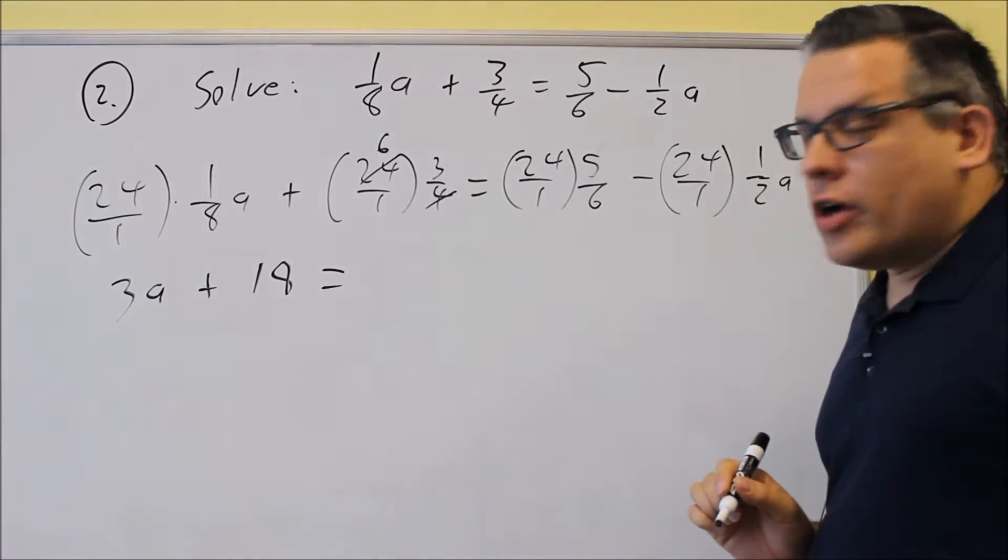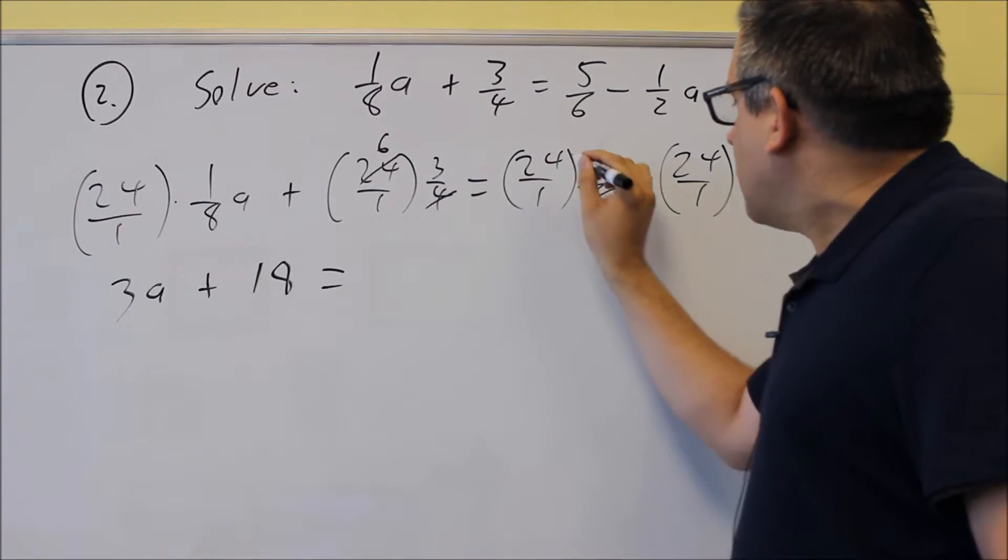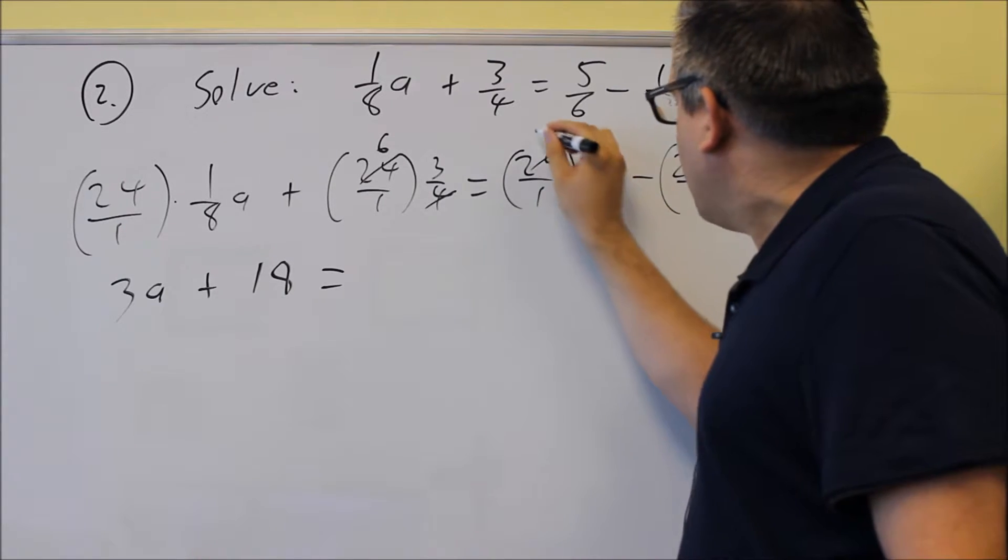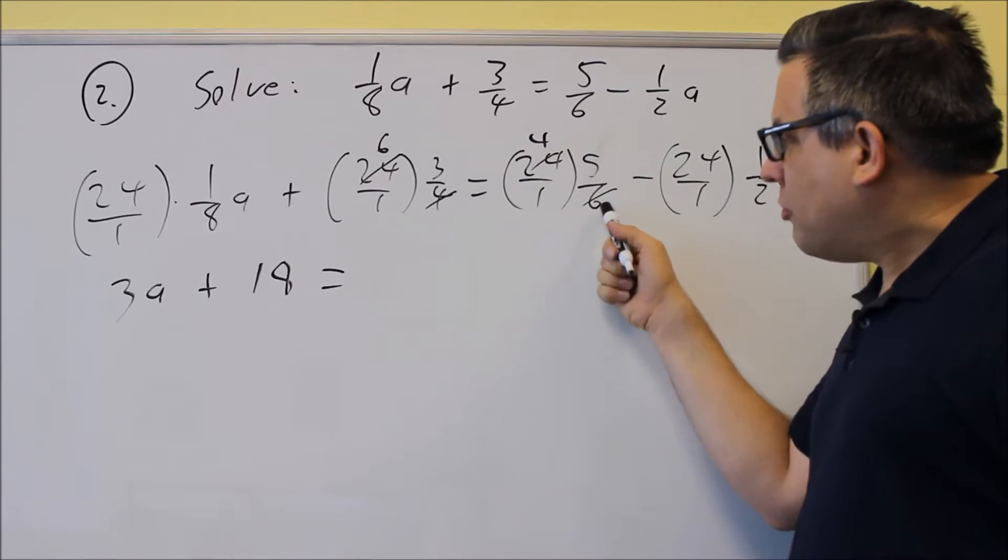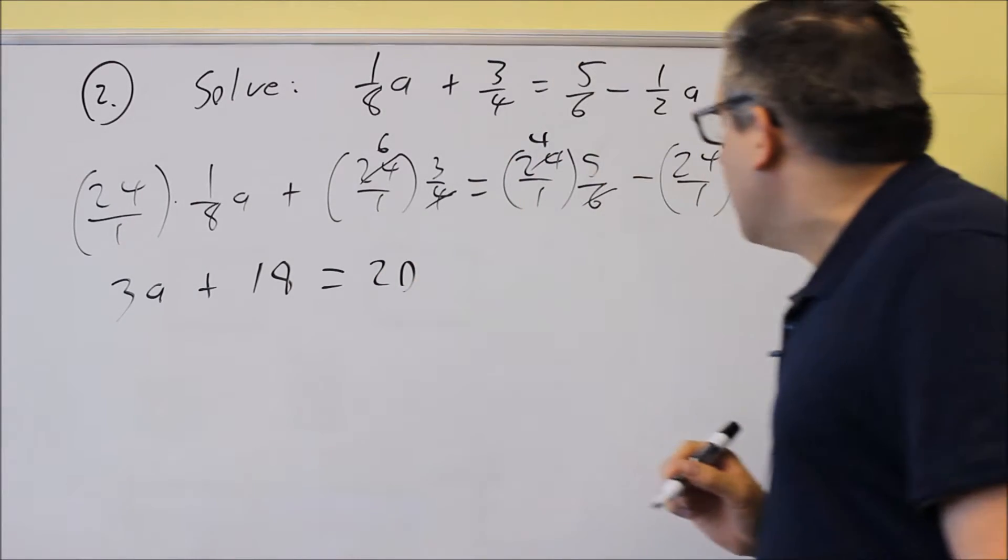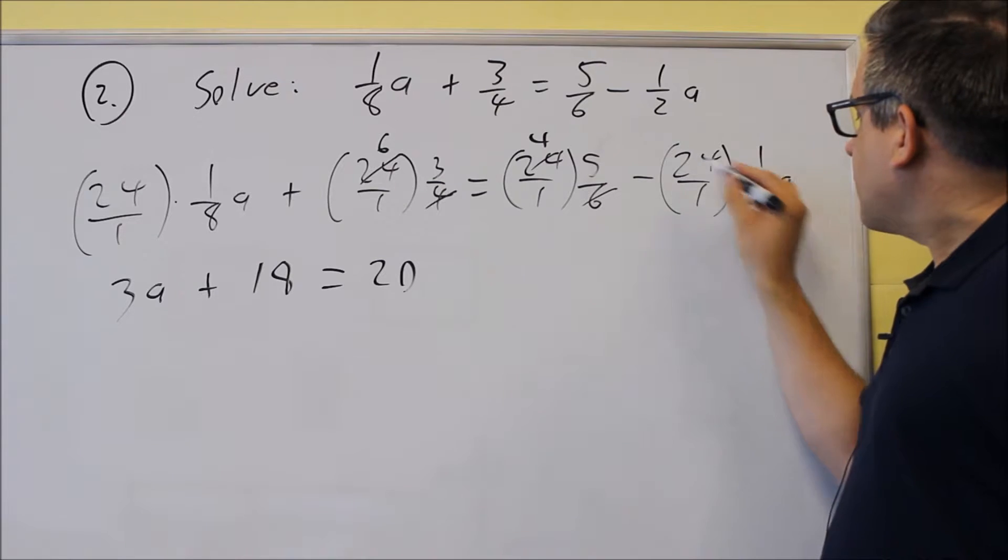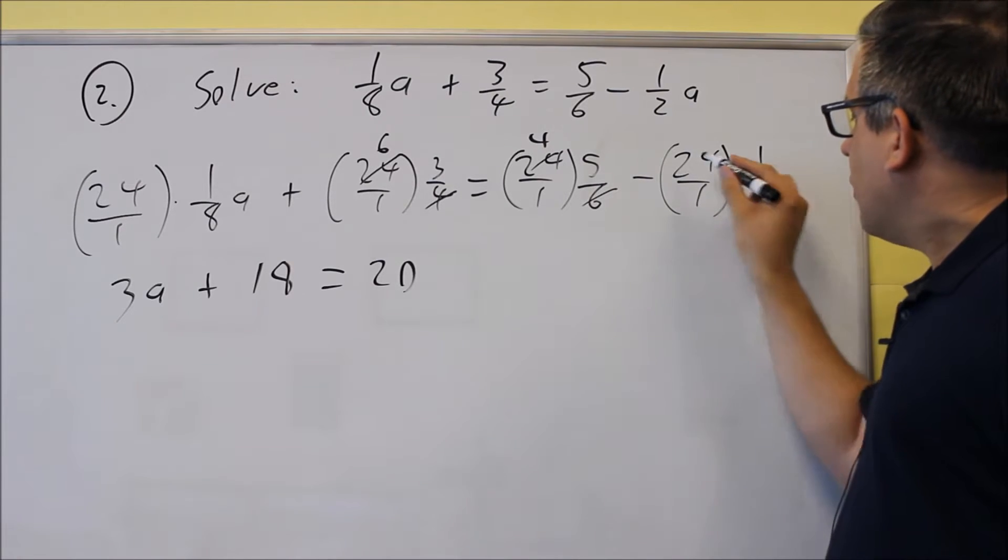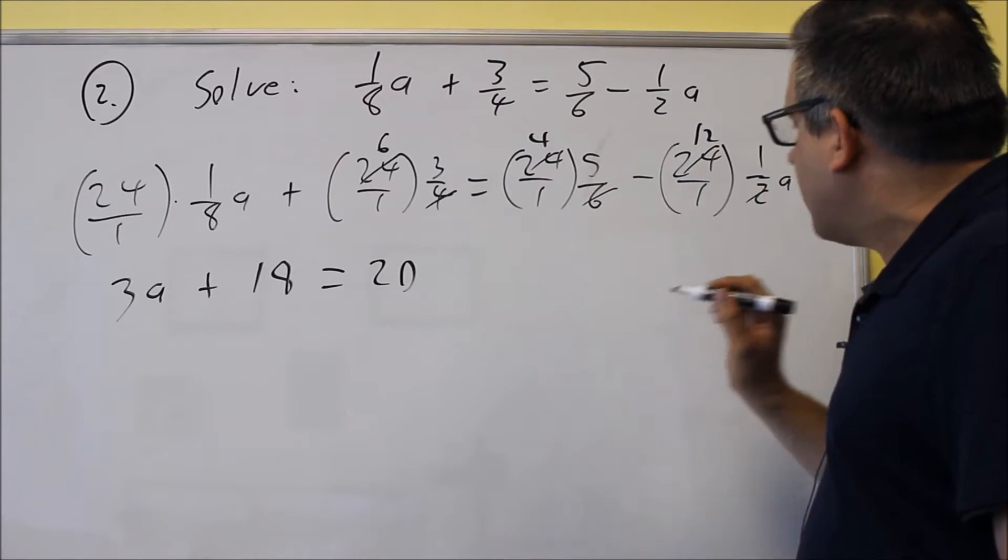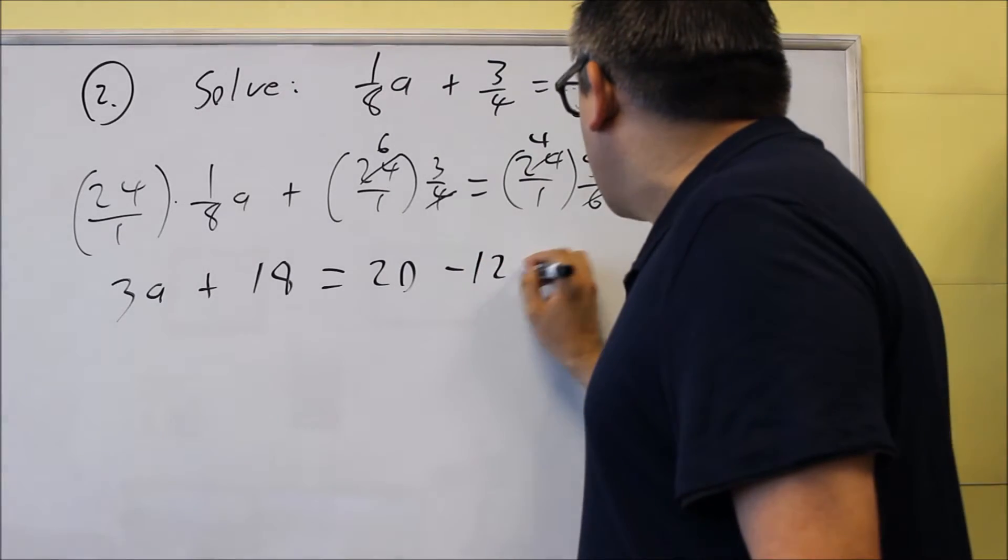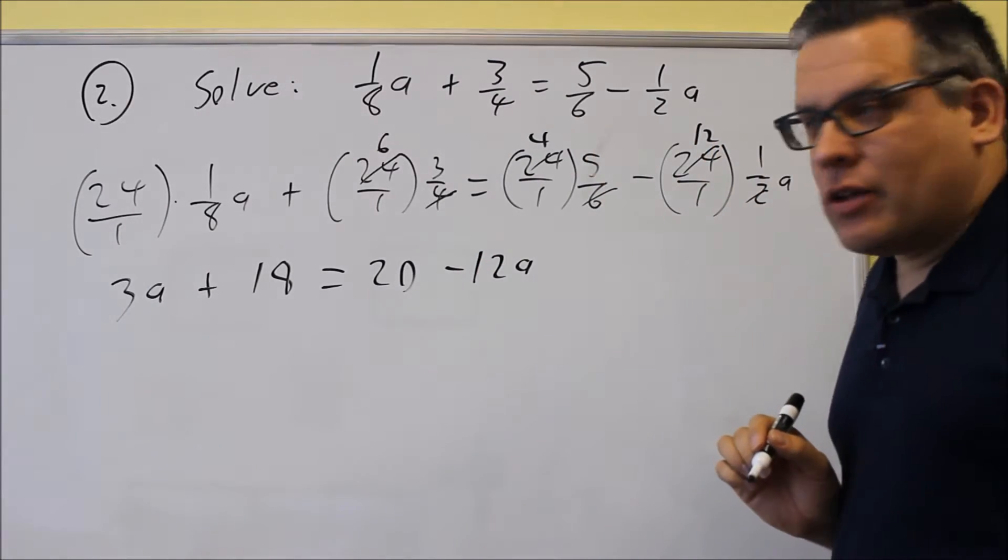On the other side of the equation, the six I can reduce into twenty-four, six divides into twenty-four four times, and then I have four times five left over, because there would be a one in the bottom there, so I have twenty here. And then this one, I can divide that also. So two goes into twenty-four, that's going to be twelve times, and so I get minus twelve. Don't forget about the a that's on the end there.